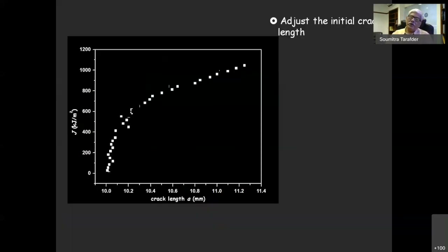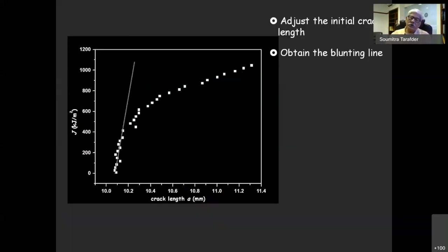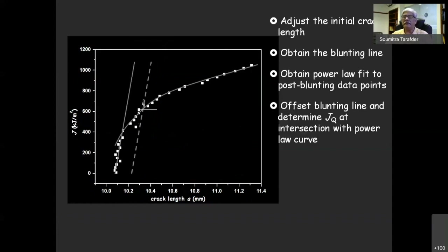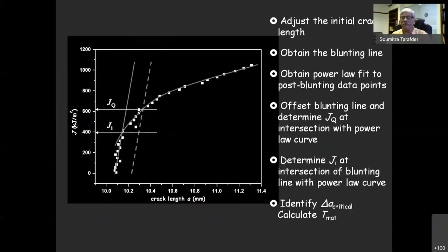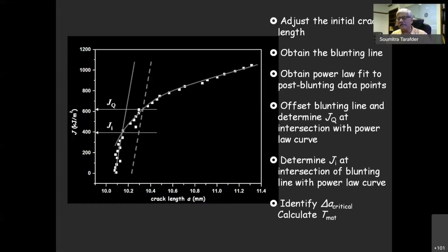Once you have the tearing curve, you perform several operations per standard: obtain the blunting line, obtain a power law fit, offset the blunting line to get a provisional fracture toughness JQ, and also determine the initiation toughness JI. You can then reiterate by redefining the blunting line to confirm standard values and verify they conform to J1C if conditions are right.